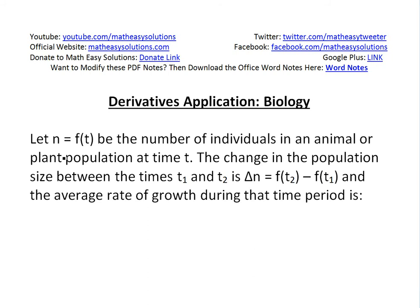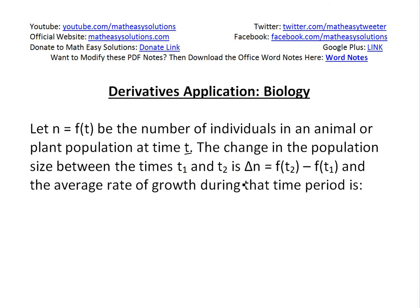Basically, if we let n = f(t) be the number of individuals in an animal or plant population at time t, then the change in population size between times t₁ and t₂ is Δn = f(t₂) - f(t₁), or the population at t₂ minus population at t₁. And the average rate of growth during that period of time is...